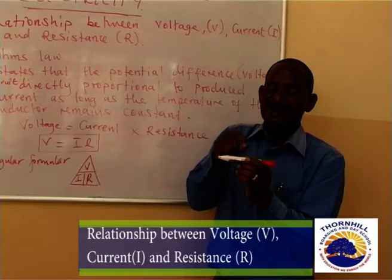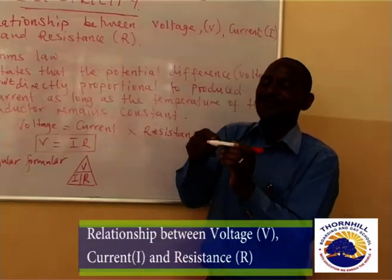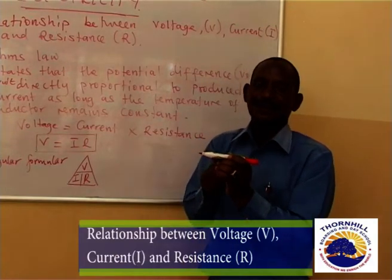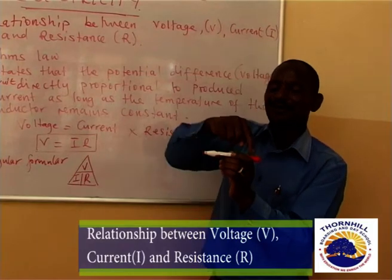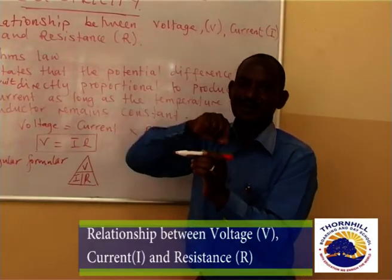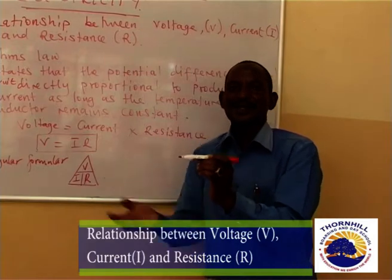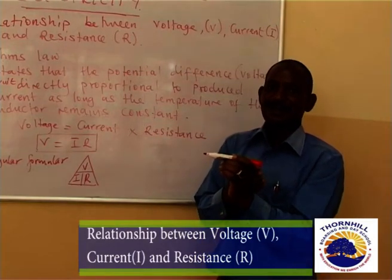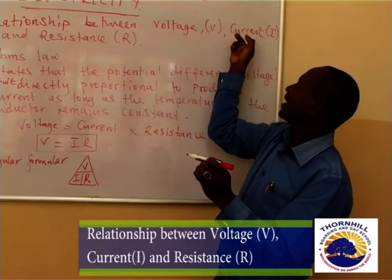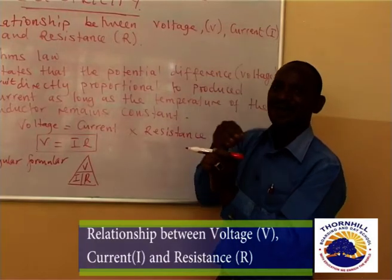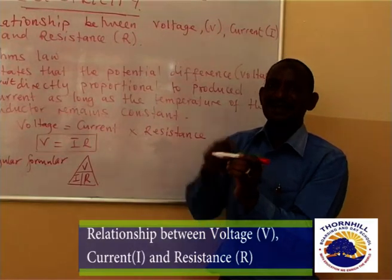This is known as the potential difference. Why? Because at each given point of the conductor, the temperature may be different. So the potentiality of the conductor to allow the flow of current will give us the potential difference across that given circuit. And in the end, we have to know what is the amount of current flowing throughout that given conductor in a circuit.